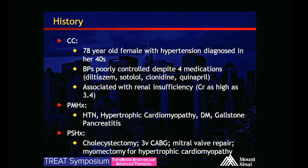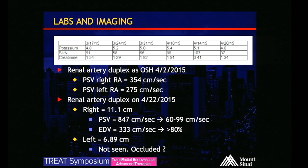Her surgical history is as listed. Her creatinine is always kind of elevated, most recently 1.34. On noninvasive imaging she had elevated velocities in the right renal artery — 3.54 — and in the left, 2.75.